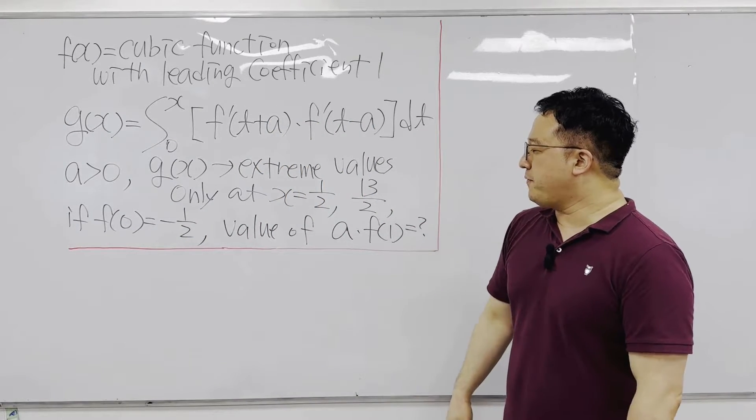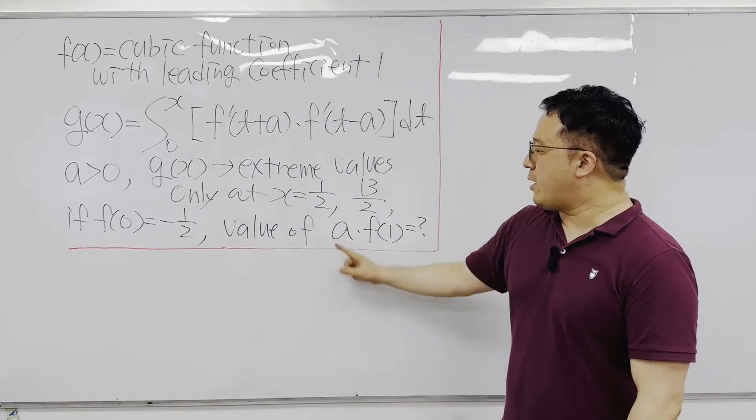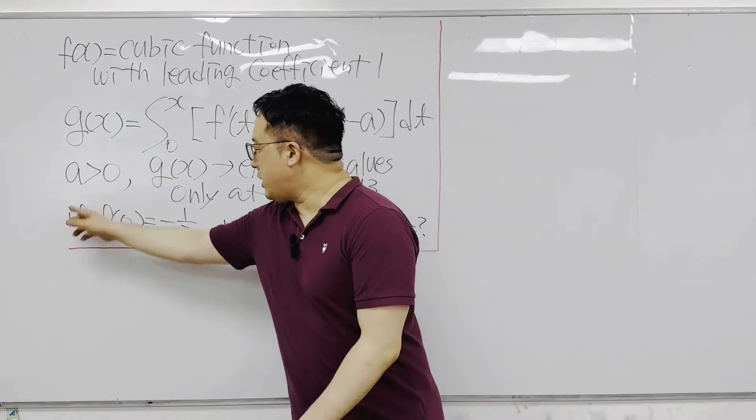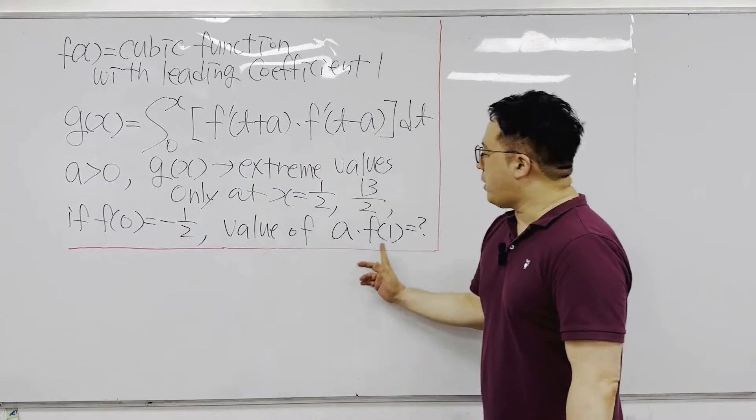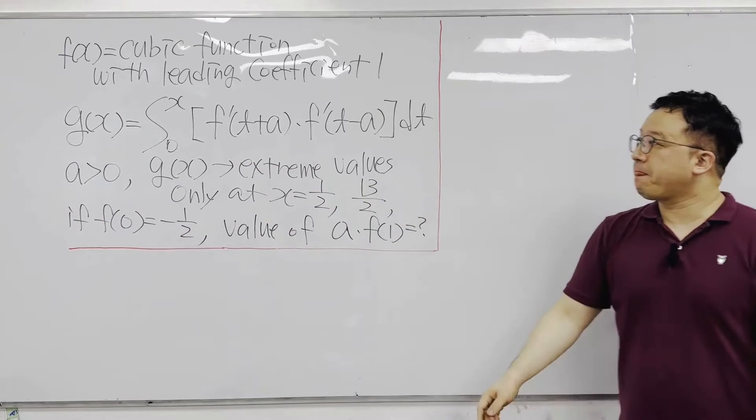What should be the value of a times f(1)?